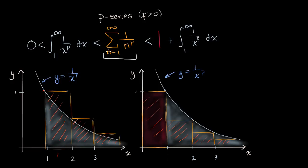Now think about what happens: if we know that the improper integral diverges — it doesn't converge to a finite value — well, the p-series is greater than that, so if the integral diverges, the p-series is going to diverge too. Similarly, if this integral converges to a finite value, then one plus that is still going to converge, and so our p-series must also converge to a finite value. All I'm talking about here is really just the integral test, when we think about tests of convergence and divergence.